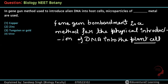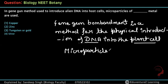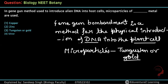Basically, the gene gun method is used for the plant cell. We introduce the DNA physically using microparticles. These microparticles are called tungsten and heavy metals and gold. This is directly from NCERT, so your answer will be the third option.